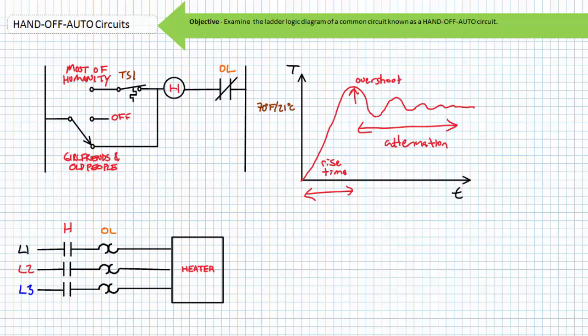All right, this wraps up this super brief lecture on hand-off-auto circuits. In conclusion, this lecture examined a common modification to automatic circuits that allows the automatic nature of the system to be disabled or manually overridden with the use of a three-position selector switch or a single pole triple throw switch with center off.